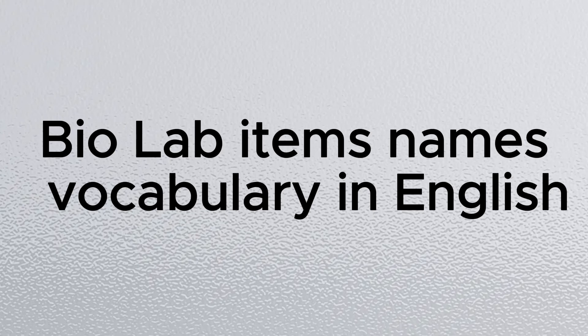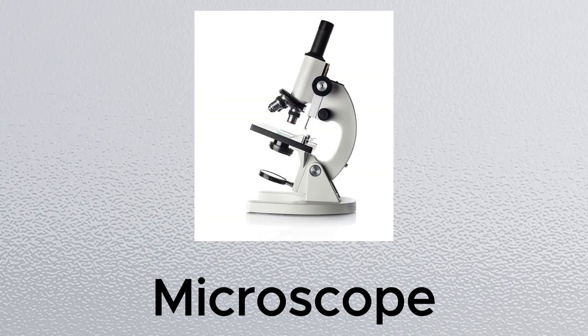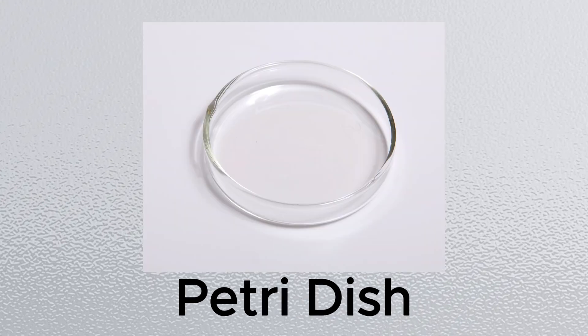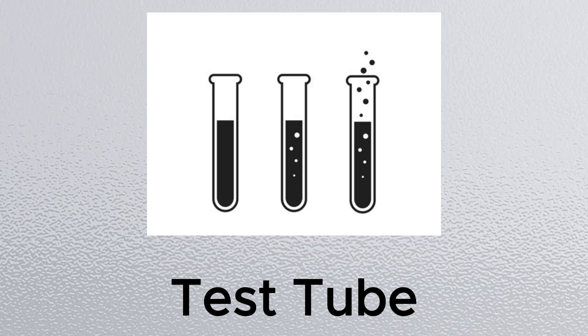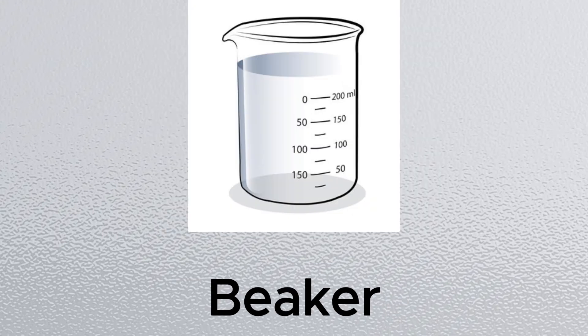Bio lab items names vocabulary in English. Microscope. Petri dish. Test tube. Beaker.